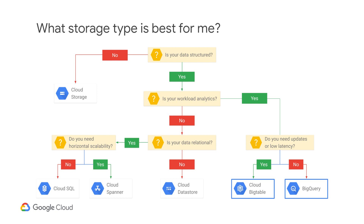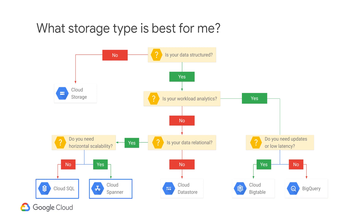If you need a structured solution and are utilizing workload analytics, BigQuery and Cloud Bigtable are two options. If a relational database is needed, then you can choose either a traditional managed MySQL or PostgreSQL database using Cloud SQL, or use a horizontally scalable, highly available database like Cloud Spanner. If you need a simple NoSQL option to use for your application, Cloud Datastore is a solid choice. In the topics that follow, you will learn more about each option.